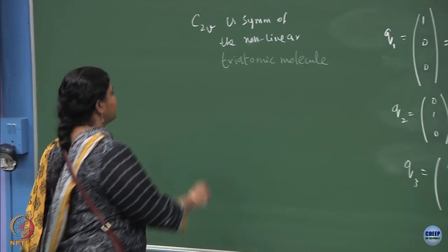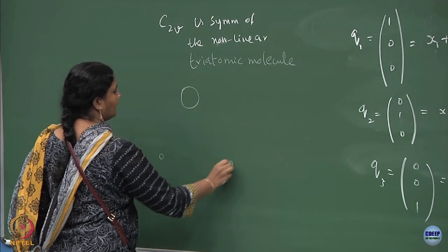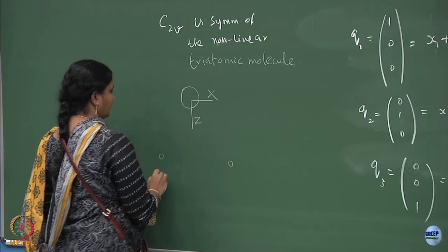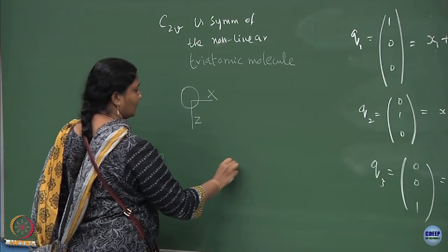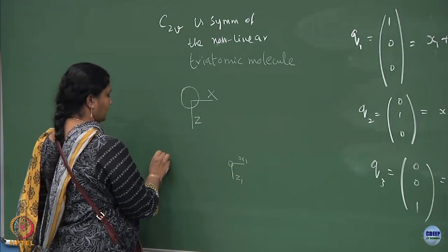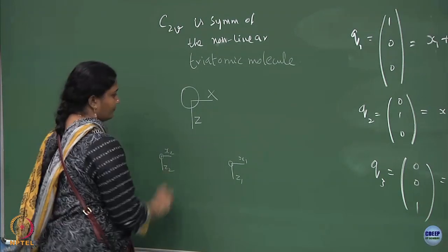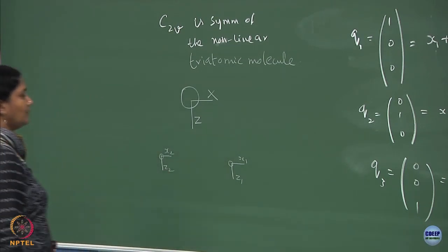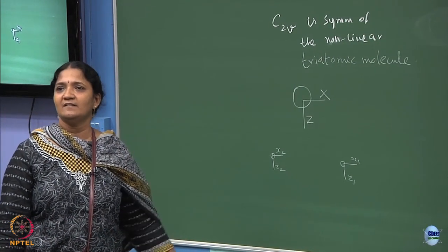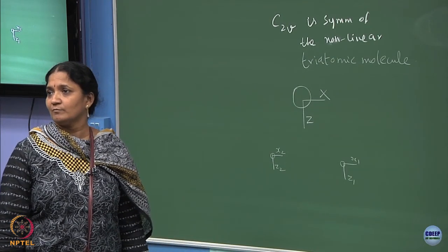Remember the picture - I had a bigger mass here, two smaller masses here. I have used a notation z axis, x axis. This one was x1, z1, this one is z2, x2. This is what I am using as the axis of degrees of freedom in the xz plane for every atom in that molecule.